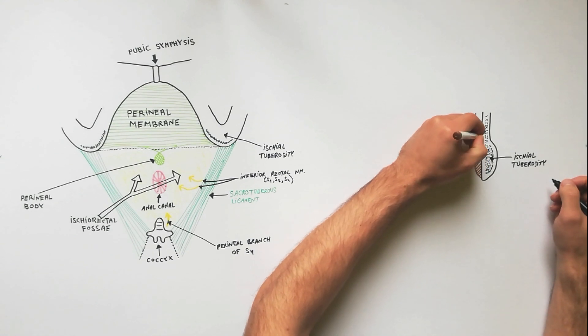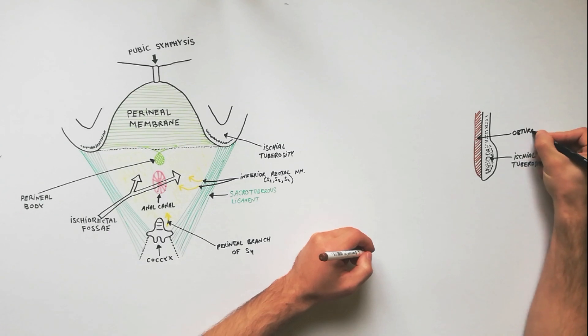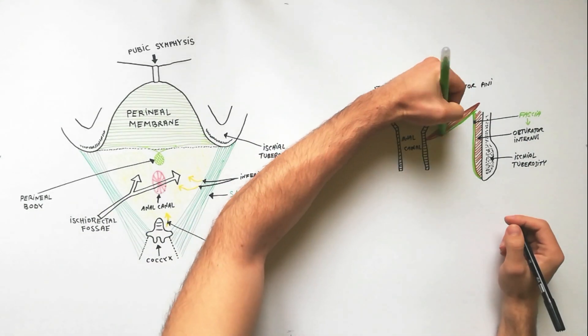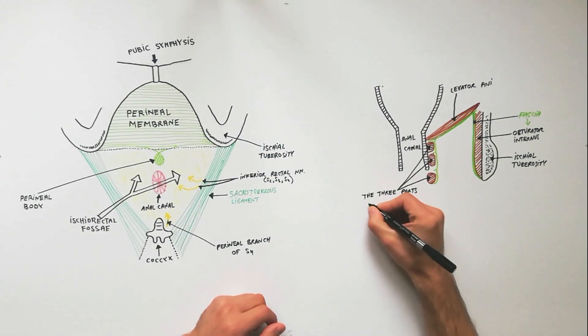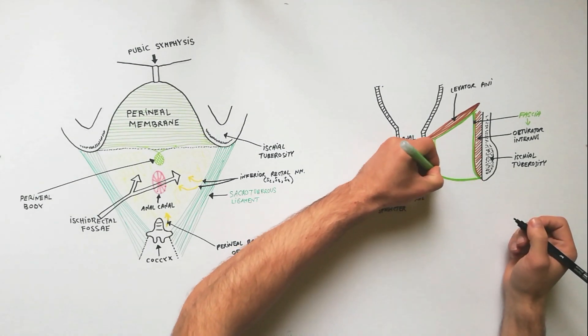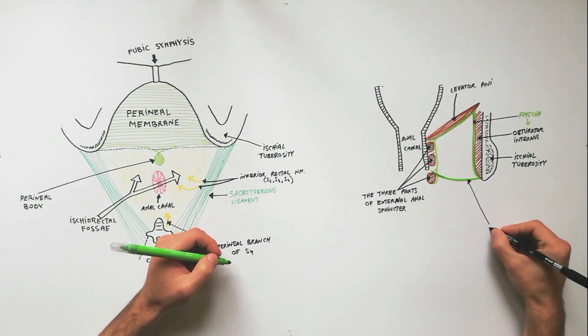Laterally, we have fascia covering the obturator internus muscle and ischial tuberosity. Medially, we have fascia covering the levator ani muscle and external anal sphincter. The floor of ischiorectal fossae is realized by the perineal skin over the perianal fascia.